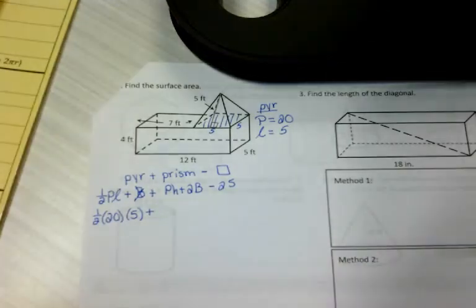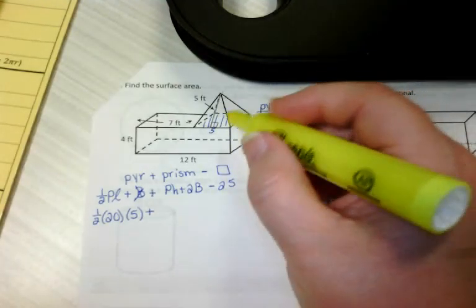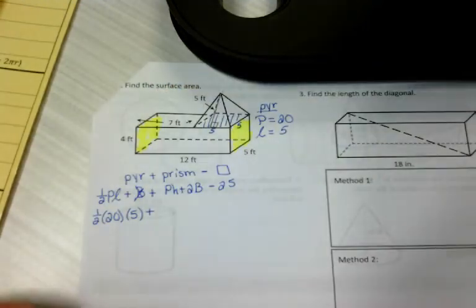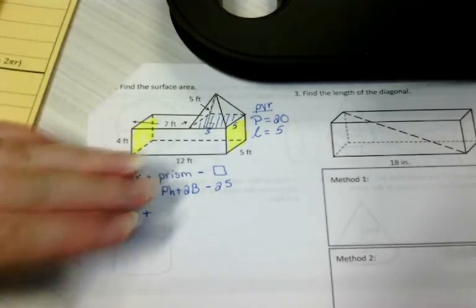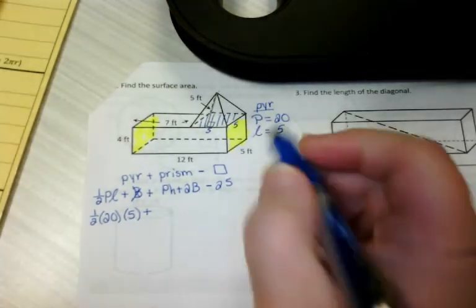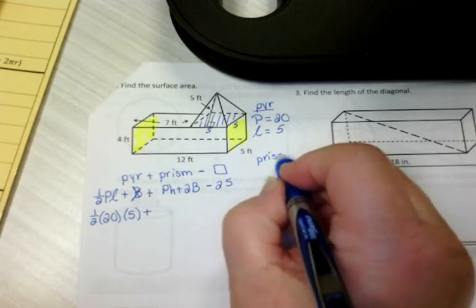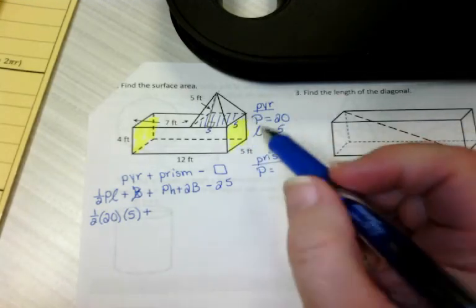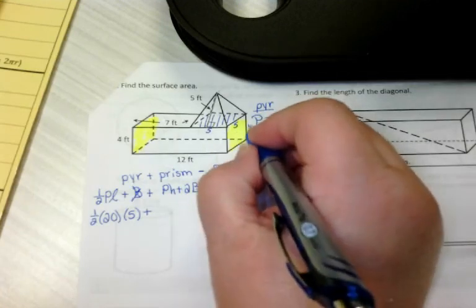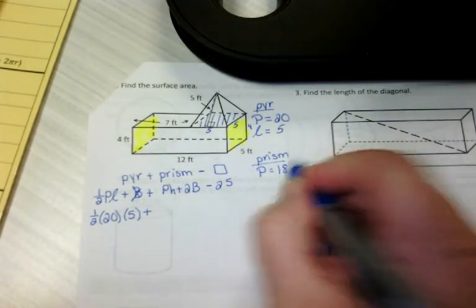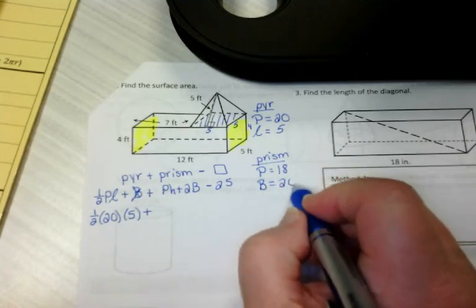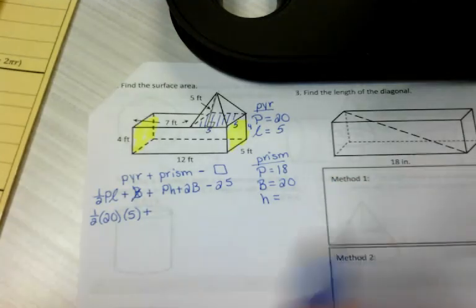Now for our prism, we've got to choose a base. It really doesn't matter what you choose for your base. I think I'm going to choose this one for my base. You could have picked the front and back. You could have picked the top and bottom. We would all get the same answer. All right, so for my prism, the perimeter of my base is this 5 by 5 square. Oh, it's not a 5 by 5 square. It's a 5 by 4 square. So the perimeter of my prism would be 18. The perimeter of my base, sorry. The area of my base would be 20. And the height of my prism is the distance between the bases, which is 12.